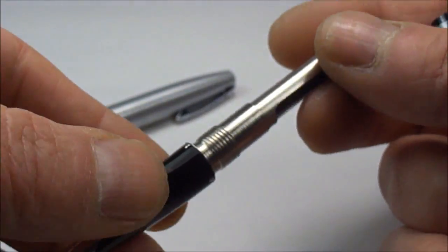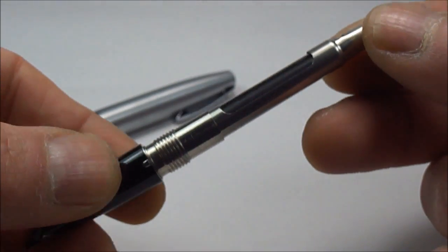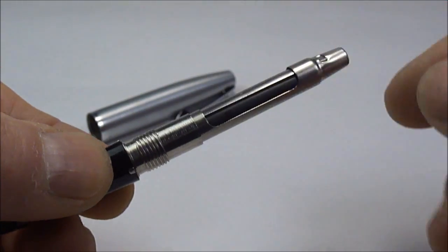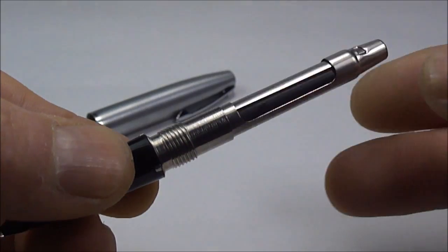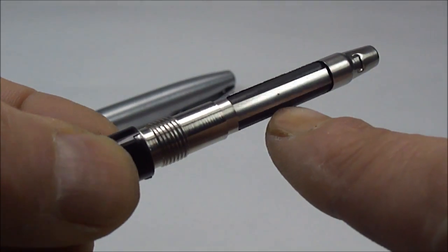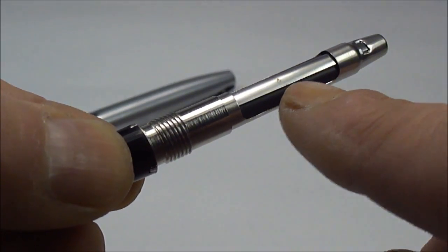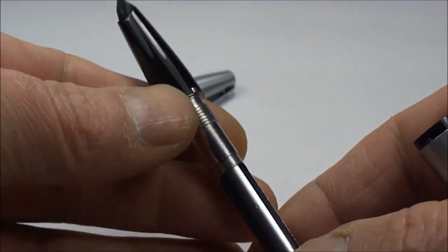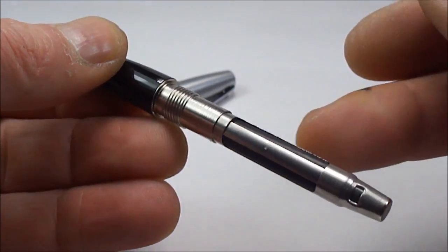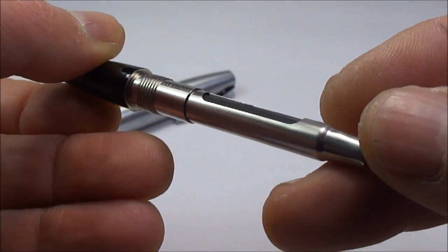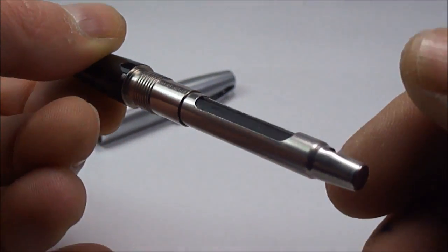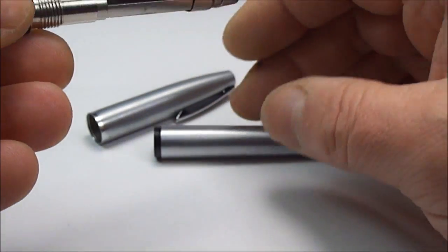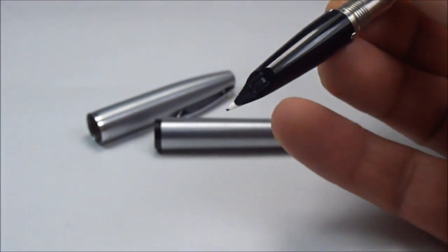If we take the barrel off, you can see the pen here. It comes with the standard Sheaffer converter, which basically what happens is you press the bar here to fill this sack underneath. These particular pens also can be fitted with standard Sheaffer cartridges as well.